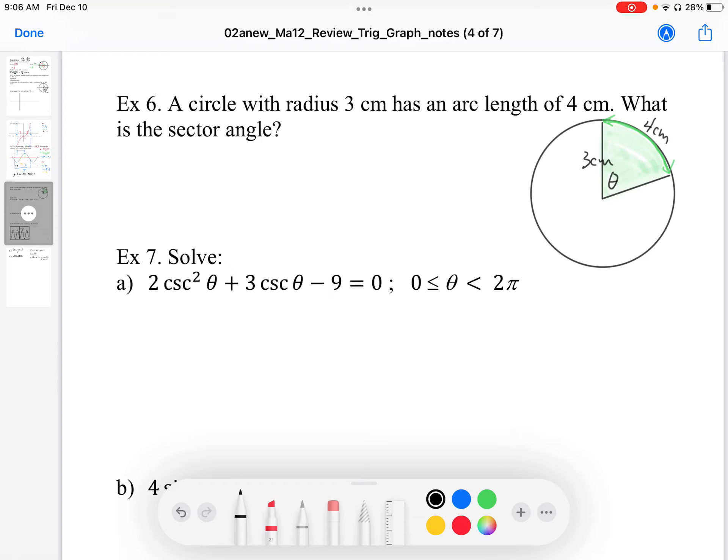We want to know the sector angle. So there's a formula for this, but really if we don't remember the formula that's fine because we can just use the ratio of the angle sector angle divided by the whole circle which is 2 pi radians.